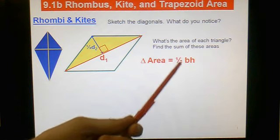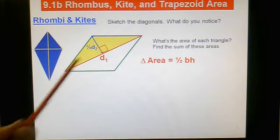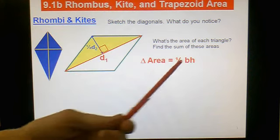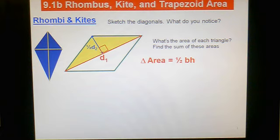I want to write this in terms of the diagonals. So the base is actually D2. If you were to turn this triangle a little bit sideways, D1 is actually base. The height is actually D2, or sorry, half of D2.